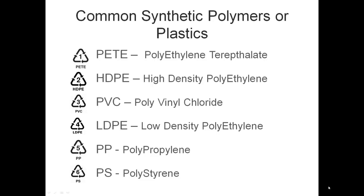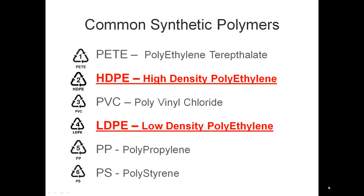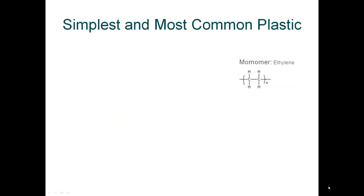Although PET is number one, it is not the most common plastic. Number two and number four are the most common. They're also chemically one of the simplest polymers to understand and least expensive to make. So let's talk about these first.